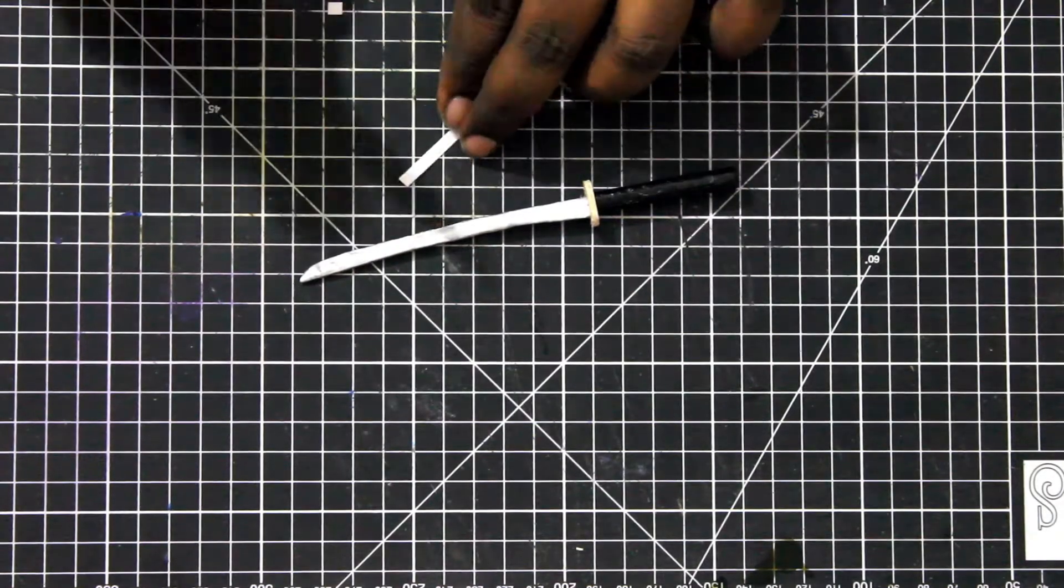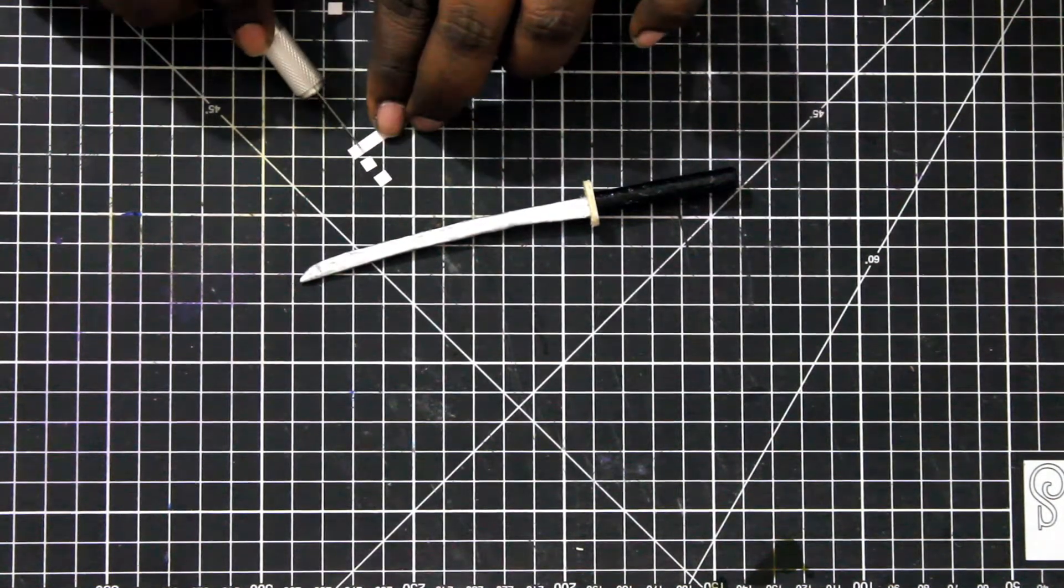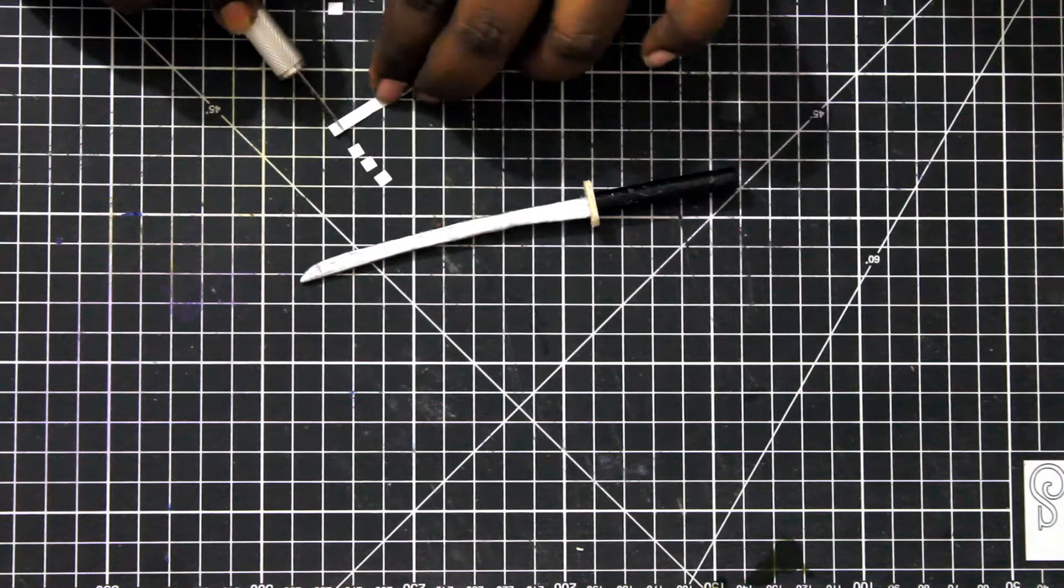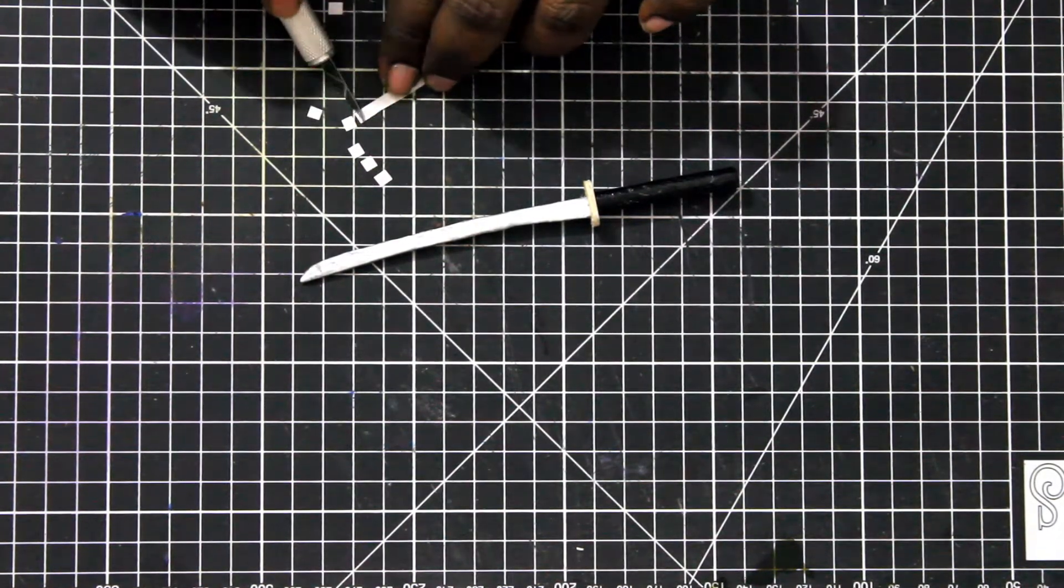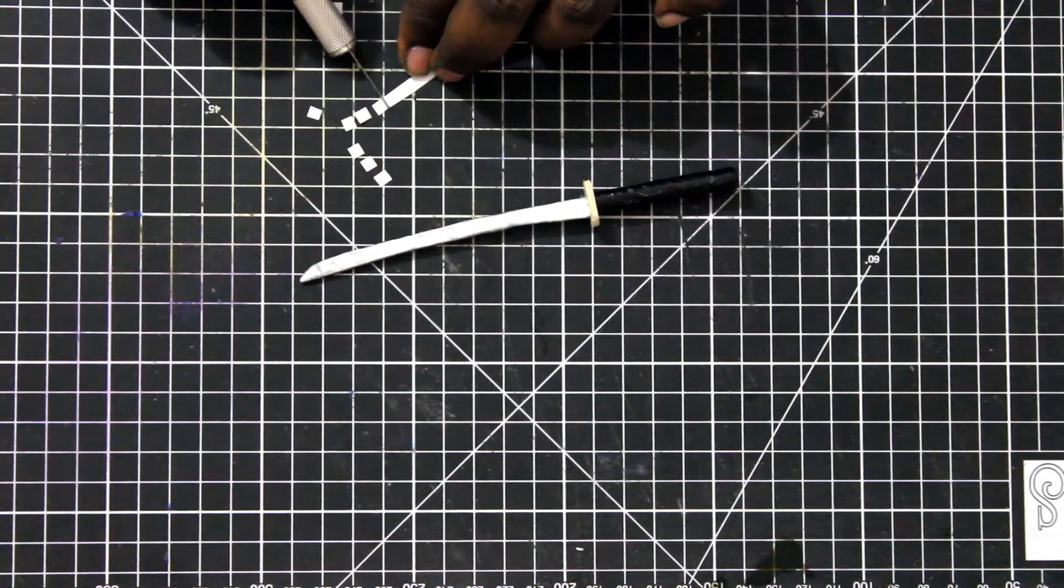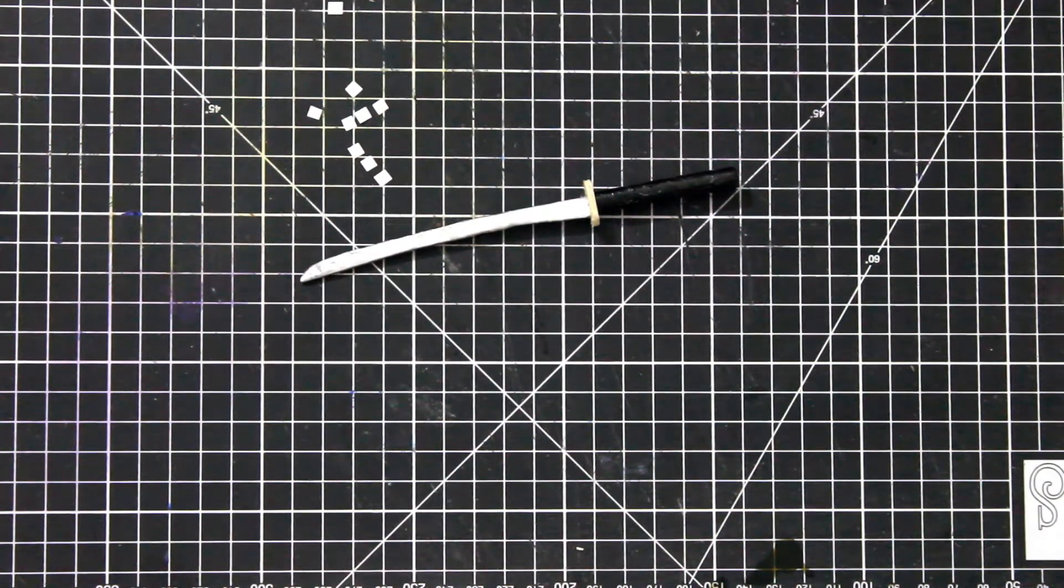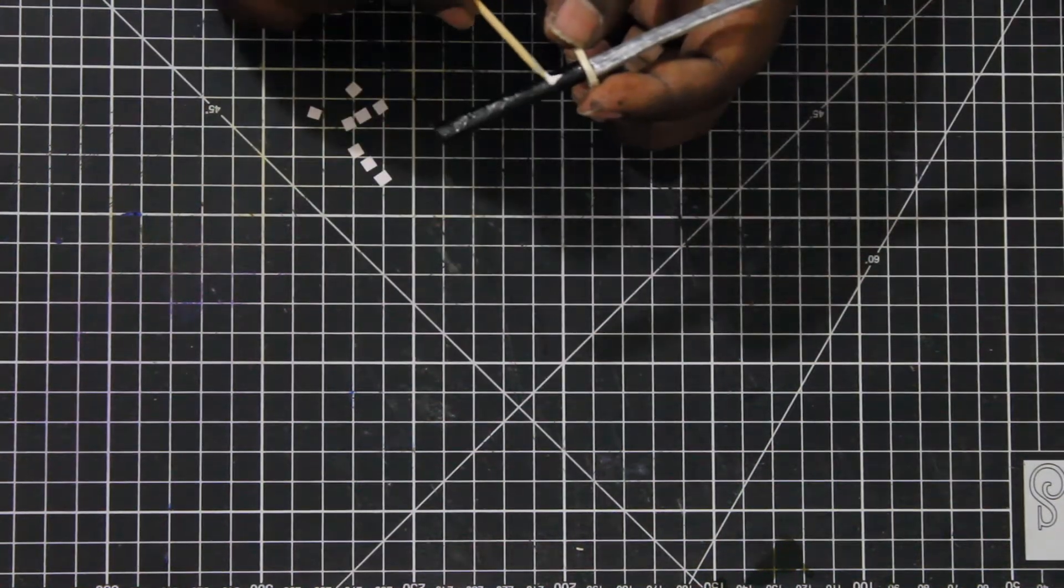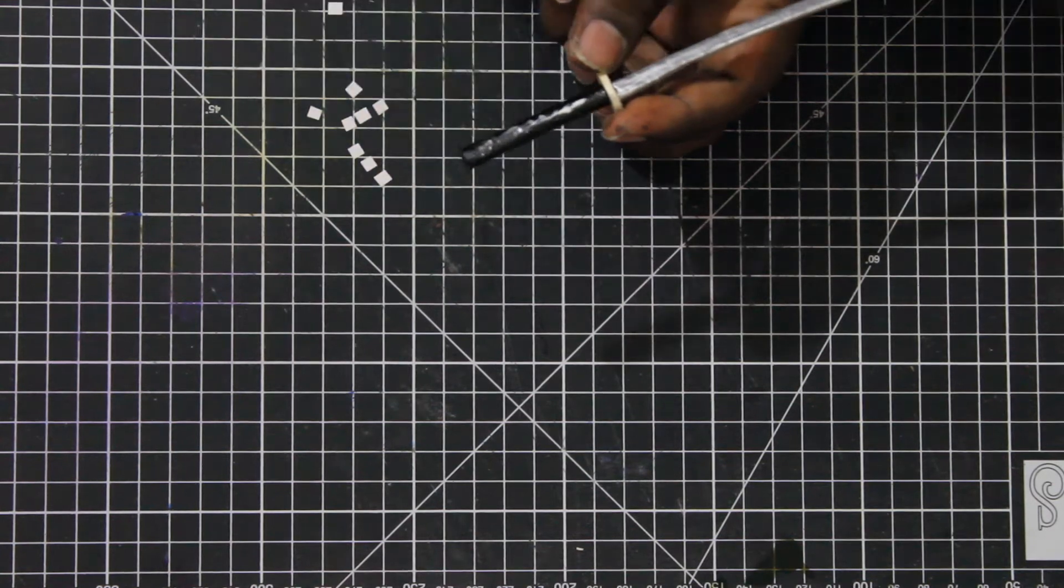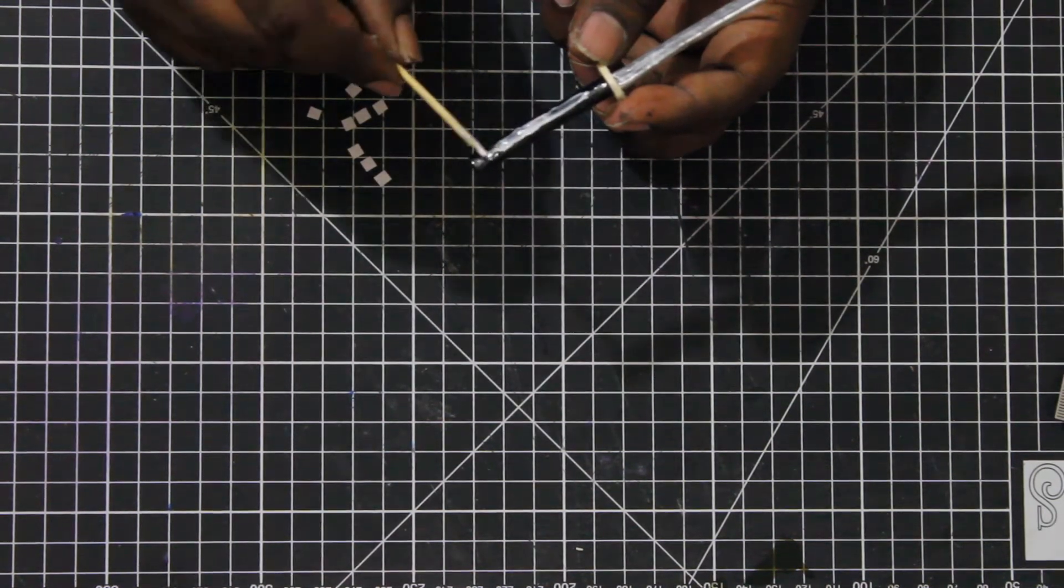For the design on the handle take a strip of paper and cut ten squares from it. Now stick it to the handle with glue.